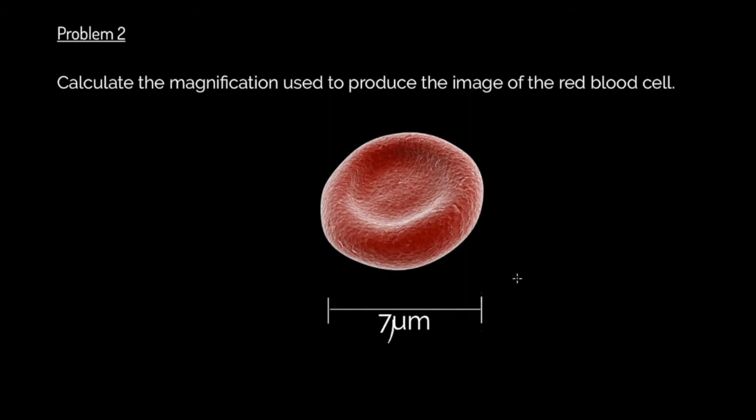Problem two, calculate the magnification, that's what we're looking for, used to produce the image of the red blood cell. So let's go straight in to our stage one. We know that in stage one, we are going to draw our equation triangle, because it is very helpful to us. And we remind ourselves of the I AM, and we got to look at our units as well, which in this case, we already see because we've got some micrometers in our question here, the actual size. We already know that our units are going to be in micrometers. So we've established there the equation triangle, and we've identified the units.